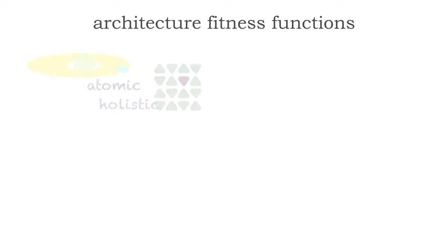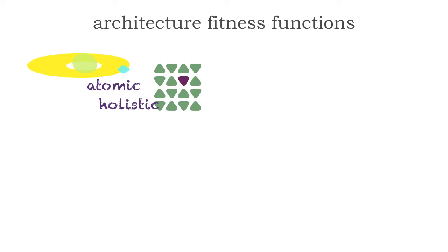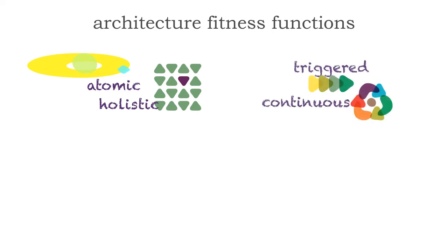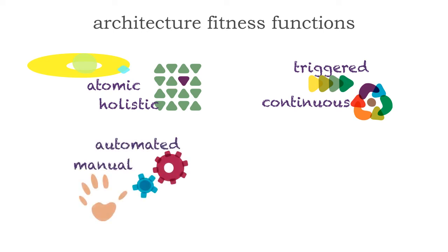Let me show you the categories of fitness functions. Fitness functions can take four different forms. They can either be atomic or holistic — targeting one specific area of the system or the system as a whole. They can also be triggered or continuous: triggered based on some event such as a commit or a deployment, or continuous, which basically runs in production continuously.